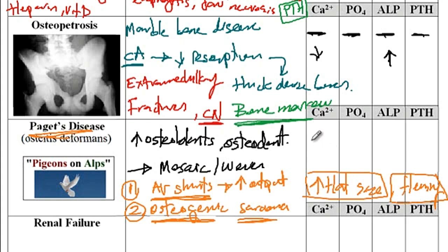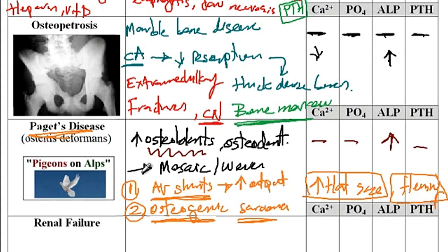In terms of lab values in Paget's disease, everything is normal except for an elevated level of alkaline phosphatase due to the increased osteoblastic activity. A memory aid is 'pigeons on Alps mountains' — alkaline phosphatase is the only factor that is elevated in patients with Paget's disease.